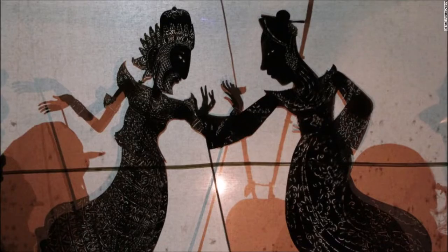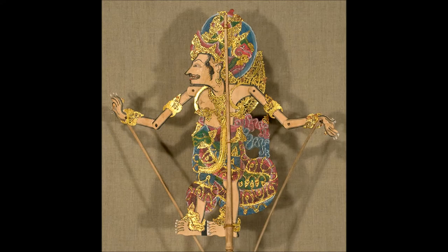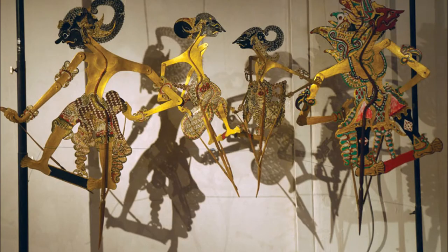Shadow puppetry is a common form of storytelling in Bali. These stories will often be inspired by Hindu epics such as the Ramayana and the Mahabharata. The puppets themselves resemble characters from these stories and are painted and cut out into beautiful shapes.